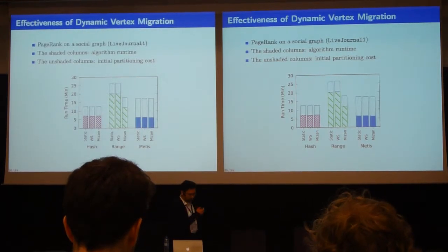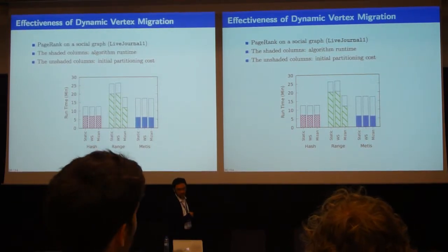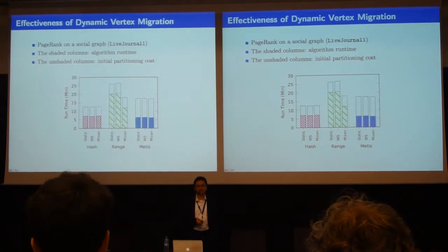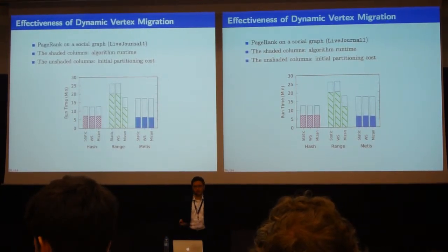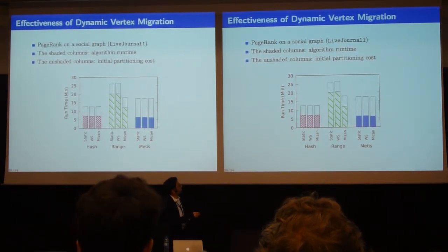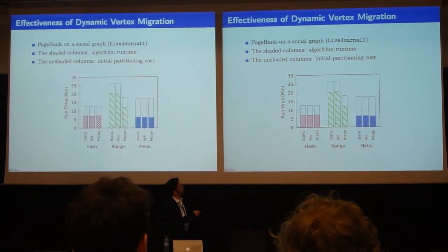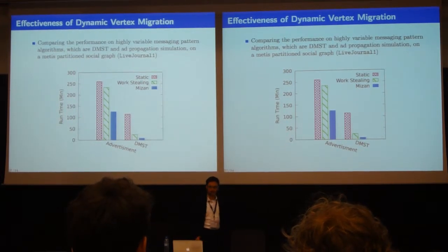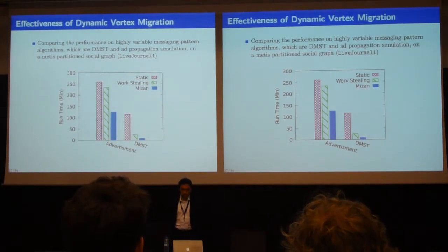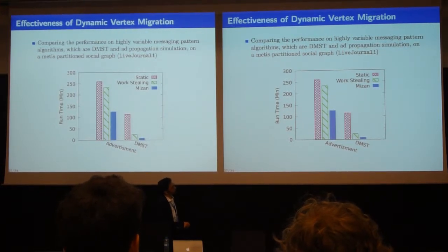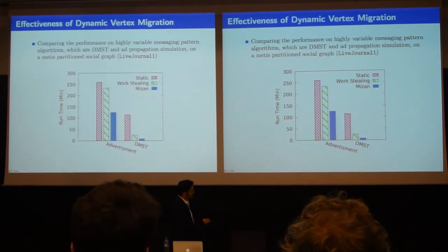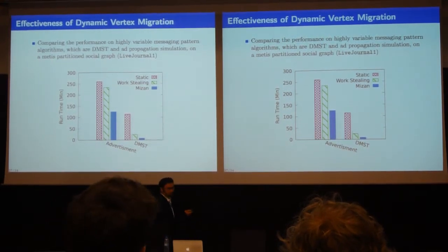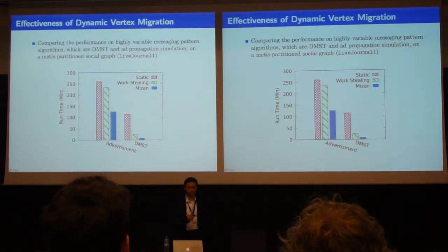In the next experiment, we tested PageRank — a stationary algorithm — on three types of partitioning. We wanted to see the overhead of Mizan. It's not interesting to run dynamic migrations on a stationary algorithm, but we wanted to confirm that Mizan does not impose extra overhead compared with static Mizan or the Pregel clone. We then tested Mizan with dynamic algorithms using two non-stationary algorithms: advertisement propagation and the distributed minimum spanning tree. As expected, Mizan succeeded in optimizing computation of those two non-stationary algorithms, which made us happy because we confirmed that runtime optimizations actually work. Those two algorithms have unexpected behavior — you can never know how they will behave unless you run the computations.